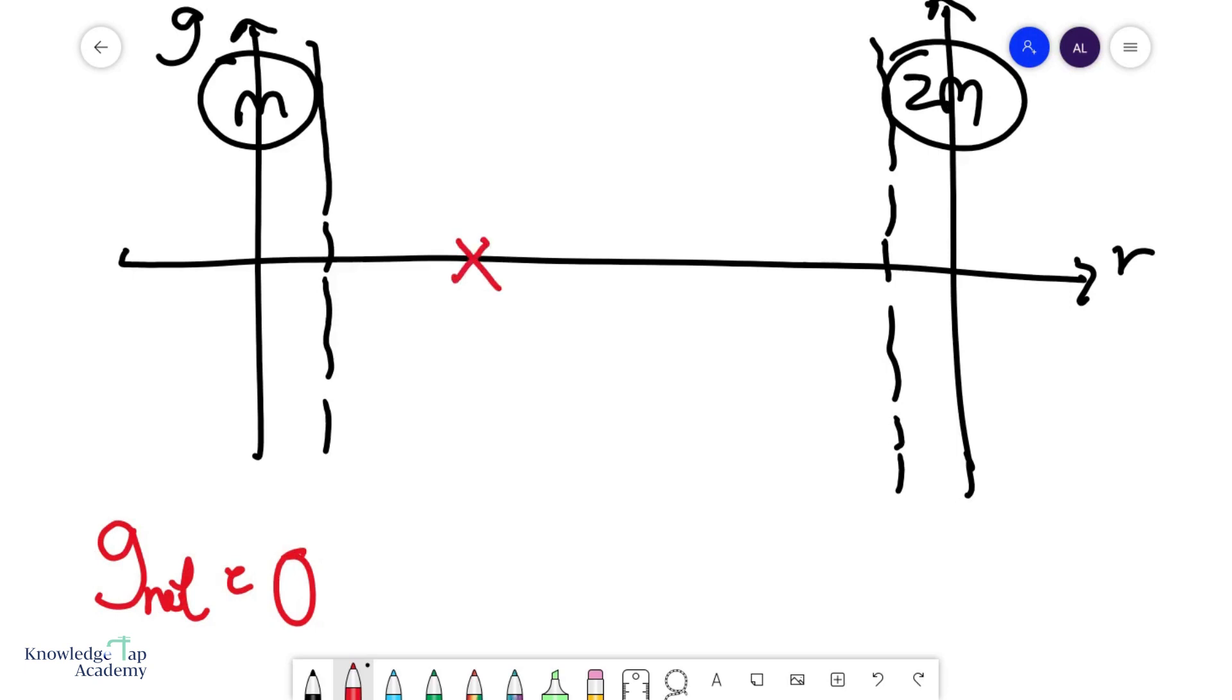And this point will always be closer to your smaller mass. Think about it. If I have a smaller mass, then technically I'm at a disadvantage because my g field is generally weaker. And so to give it a chance of cancelling out with the g field from the other mass, then I put this point a bit closer to the smaller mass. So now gm and g2m at this particular point will be exactly equal.